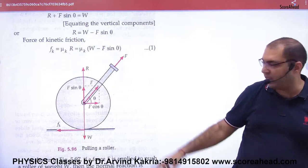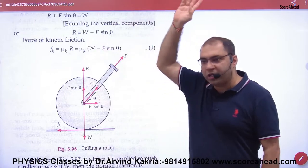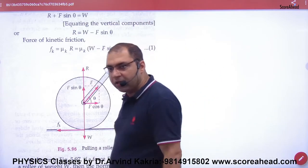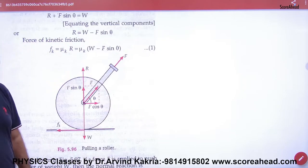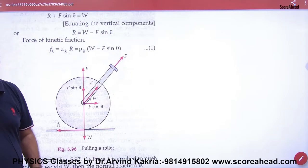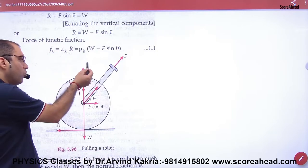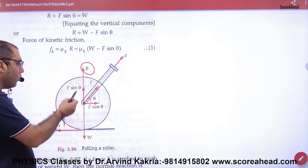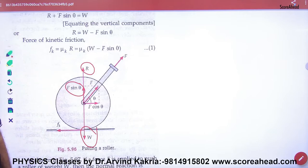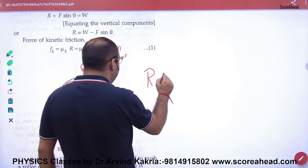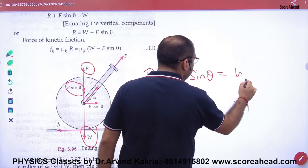The two components of F are: F cos theta (horizontal) and F sin theta (vertical, upward). The weight of the roller acts downward and the normal reaction acts upward. When pulling, F sin theta acts upward. The upper forces must balance the lower forces, so: R plus F sin theta is equal to W.